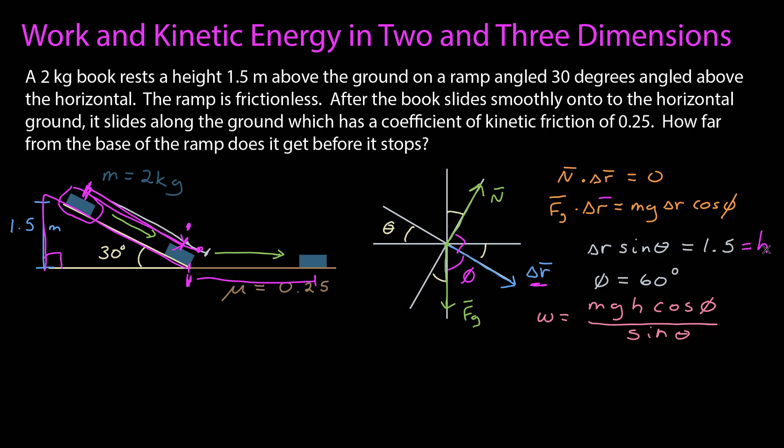Now, I could leave it like this, but I might calculate this just to see if the order of magnitude is right. When I put in numbers, I realize something right away. Cosine of 60 degrees is equal to sine 30 degrees. So they, in fact, cancel. And then when I put in numbers, I get a work of 29.4 joules.